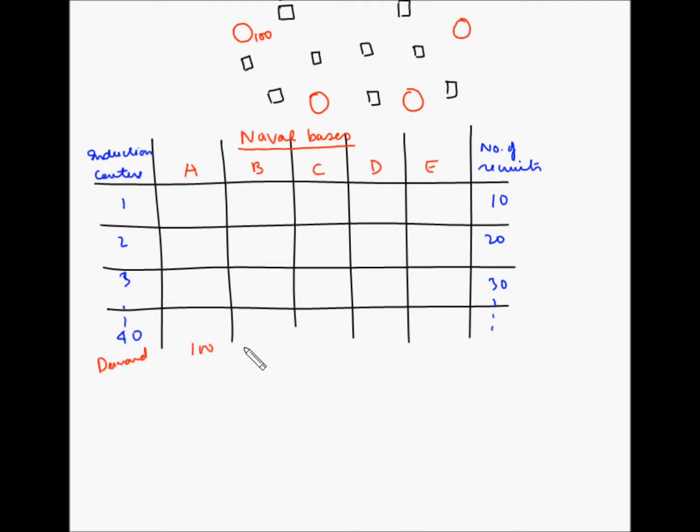This will be like 100, 150, 160, 200, 210. And in the middle, we will have the cost of moving one recruit from each of these induction centers to each of the naval bases. This can be 5, 6, 10, 15, 10, 9 and so on.